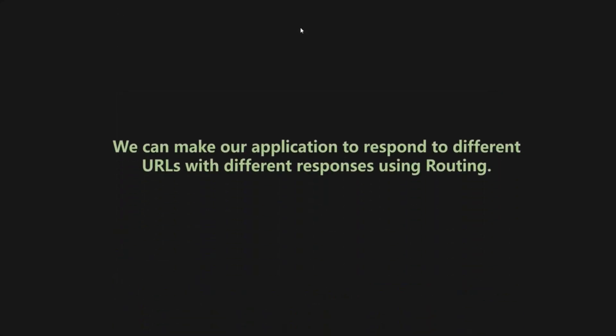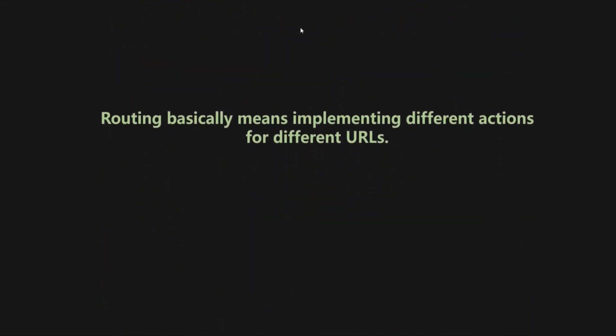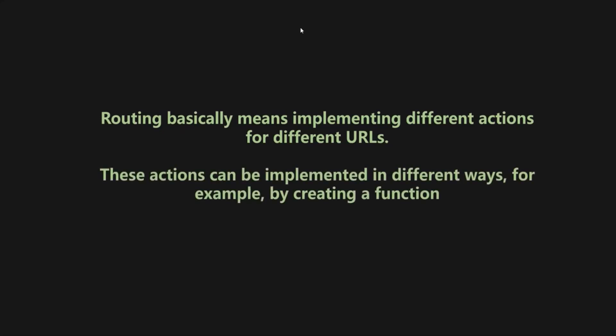So we can make our application respond to different URLs with different responses using routing. Routing basically means implementing different actions for different URLs. These actions can be implemented in different ways, for example by creating a function that will be responsible for handling different routes. We will learn how to create routes to handle different URLs in our next lecture.